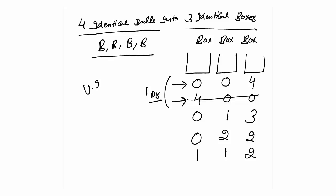Very important to understand — there is no formula for these kinds of questions. You have to manually write the distributions by following a simple pattern, otherwise you will make mistakes. The pattern is: first take cases with 2 zeros, then 1 zero, then no zeros. These are the 4 ways, so the answer is 4 ways.